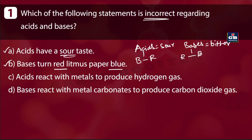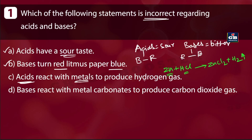The next option is 'acids react with metals to produce hydrogen gas.' Let us check: Zn + HCl — zinc is a metal and HCl is an acid. This reaction gives ZnCl₂ + H₂. So hydrogen gas is produced when an acid reacts with a metal. This statement is also true and correct, so these three options are not our answers.